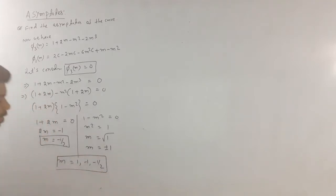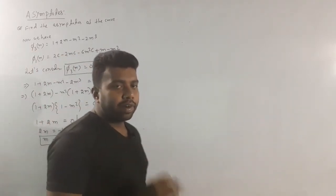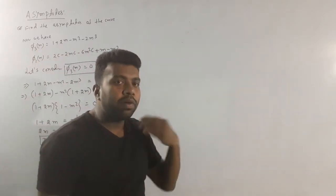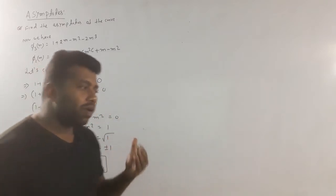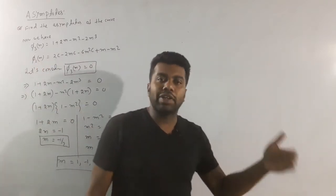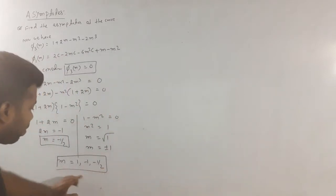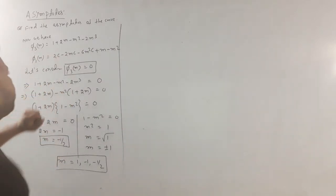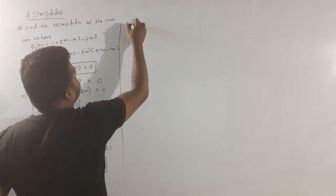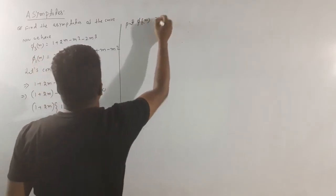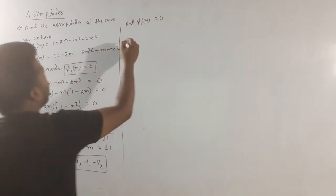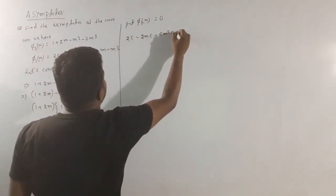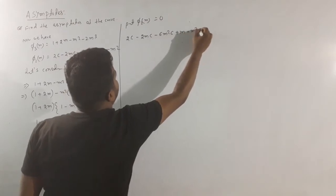All three values of m are distinct — each value is different. If m values are different, we use the normal method. If m values were repeated, then we would use the repeated asymptote method. Since here all m values are distinct, no issue. Now put phi_2(m) equal to 0: 2c minus 2mc minus 6m²c plus m minus m² equals 0.